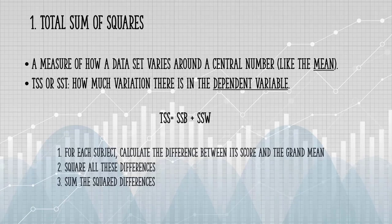You might see it written as TSS or SST. It's telling you how much variation there is in the dependent variable. There's a couple of ways to calculate it. If you already have sum of squares between and sum of squares within, you can add those two together to get the total.